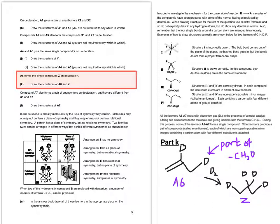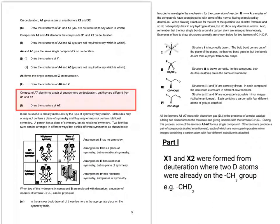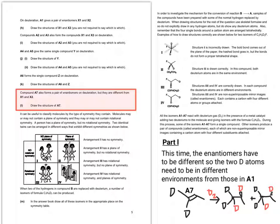Okay, so the next part of the question. So this next question requires a little bit of thinking backwards. Going back to X1 and X2 from part H, a moment to pause and rewind the clip a little bit just to remind yourself. X1 and X2 were formed from deuteration across the carbon-carbon double bond, where two deuterium atoms that were already there were on the CH3. So in other words, you'd have CHD2. So if this time the enantiomers have to be different from X1 and X2, the two deuterium atoms in the original isomer that forms them need to be in different environments from those in A1. So I'm putting the deuterium atoms in a different place for A7. So the two enantiomers you don't have to actually draw out. I've put them there just to illustrate.